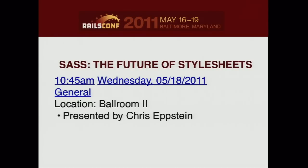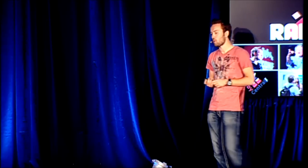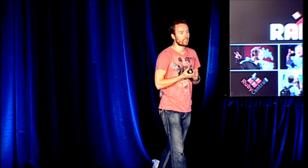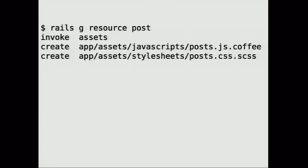We have baked CoffeeScript and SASS straight into the generators. The default assumption will be that if you change nothing, you will want to write CoffeeScript and SASS instead of JavaScript and CSS. So generators like the resource generator will now generate stub files for you. When you generate a new Post resource, you get the controller, you get the model, and you're now also going to get the stub file for the JavaScript that goes with it and the stylesheet that goes with it.